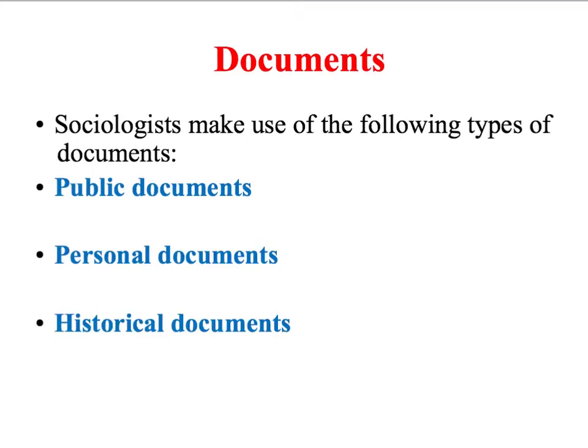Sociologists might make use of the following types of documents when carrying out secondary research. Firstly, they might want to use public documents. Public documents are produced by organisations, and that might include documents produced by government departments, businesses, schools, universities, pressure groups, charities, and of course the mass media.